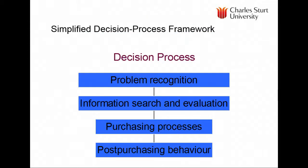Let's start with a simple decision-making process, adapted interestingly from library research, so it's directly applicable to what we've been doing in this subject. There is some sort of recognition of a problem or need — something as simple as buying new milk or sugar, or buying a new car or going on a holiday. Then there's an information search and evaluation. Purchase then occurs, and then there's an evaluation of that purchase behaviour.